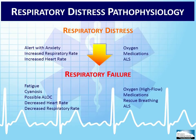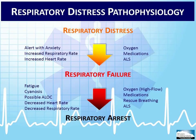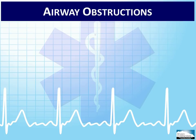Respiratory arrest occurs when breathing stops. Immediate positive pressure ventilations with a bag valve mask and high flow oxygen is required. Respiratory arrest can stem from a progression of a medical condition, a foreign body obstruction, or a traumatic event, and depending on the nature of illness or injury, this may be a gradual or a sudden process. Regardless, the pediatric patient in respiratory arrest will die if aggressive interventions are not started immediately. One of the most common causes of respiratory problems in pediatric patients is an airway obstruction. Airway obstructions are commonly denoted as being either upper or lower airway obstructions.